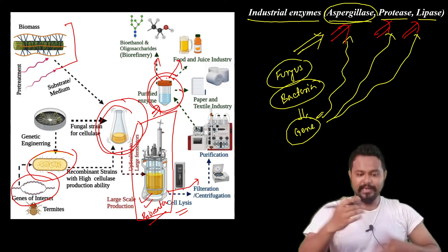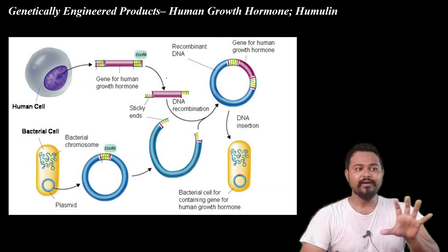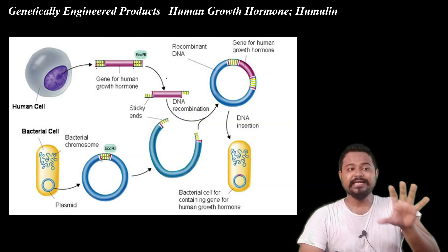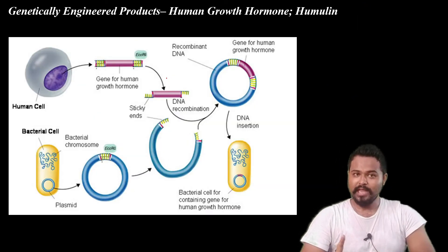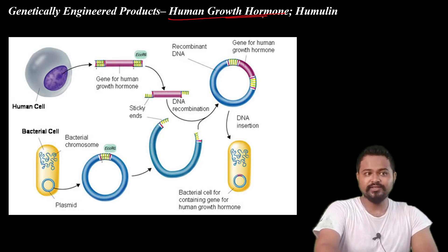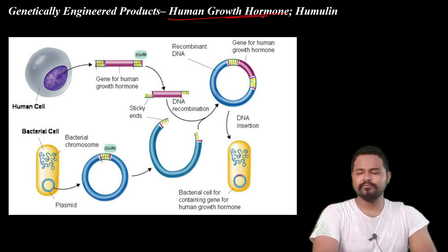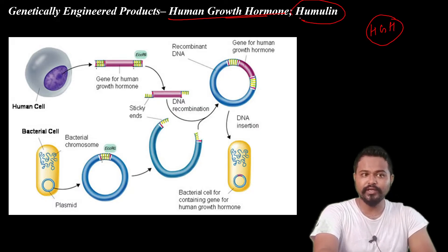The next topic is genetically engineered products. First: human growth hormone, HGH. Second: Humulin — human insulin.